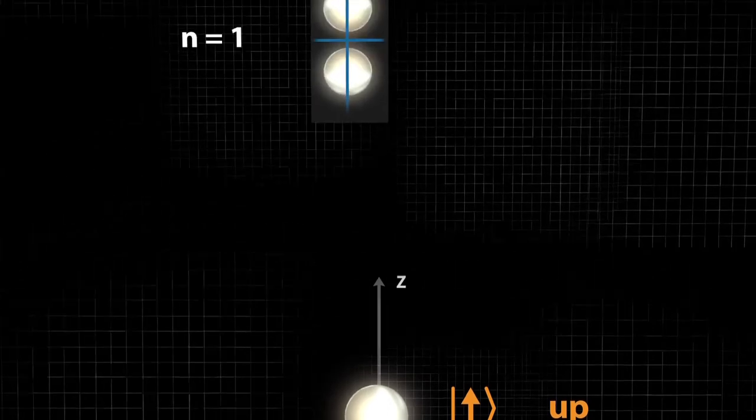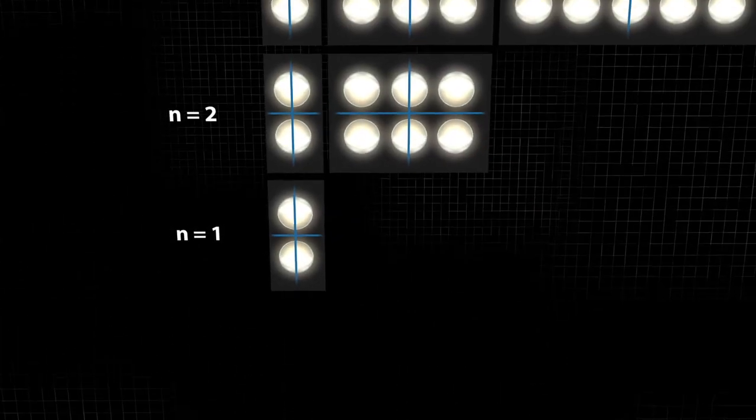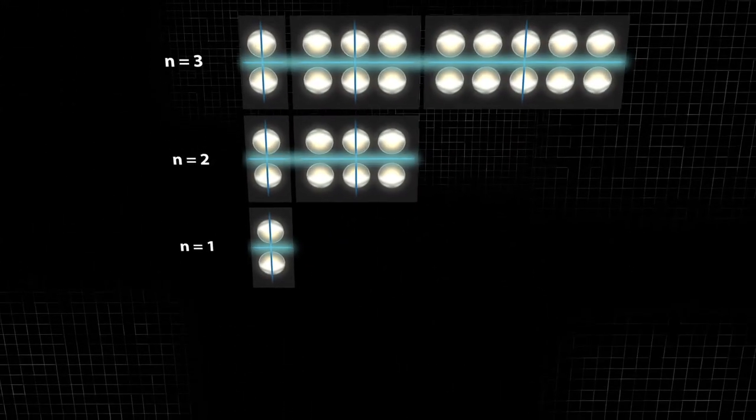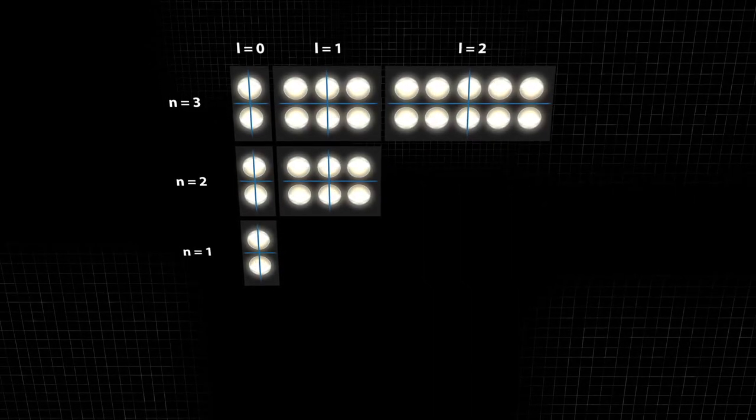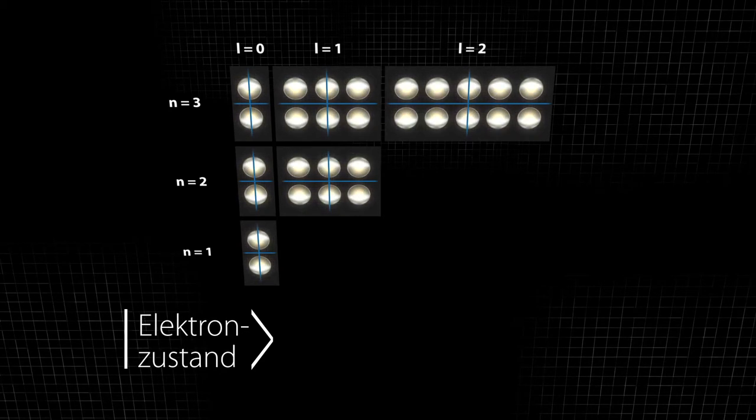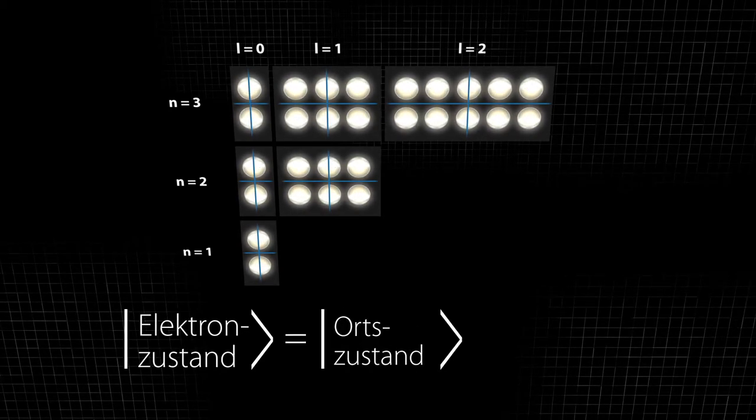This additional degree of freedom of the electron is visualized here using another mirror plane. The number of eigenstates doubles. The electron state is thus the product of position and spin state in the quantum dimension.